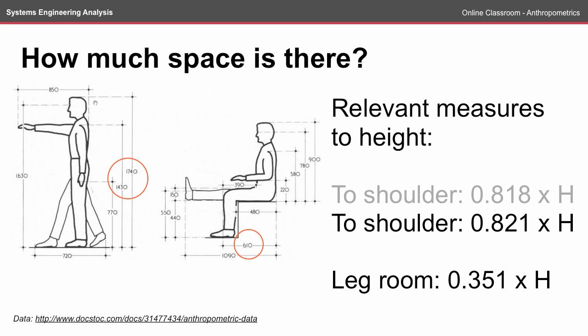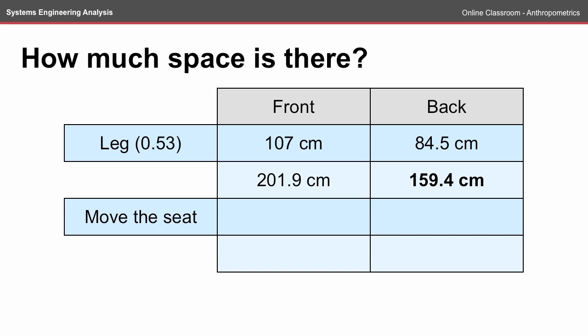In these alternative measurements, this set of diagrams indicates that 0.351 times the height is an approximate space you need for your legroom. If we apply that to just the legroom in our original example, we want to move the seat to 100cm, which is generous room for somebody who is 1.8m tall.